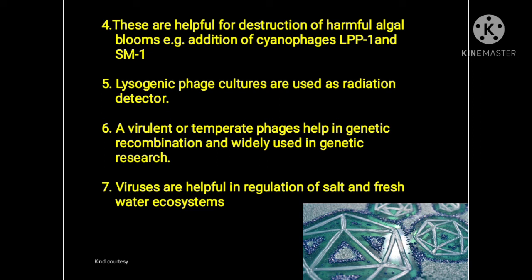The sixth economic importance is that virulent or template phages help in genetic recombination and are widely used in genetic research. The seventh economic importance of viruses is that they are helpful in the regulation of salt and freshwater ecosystems.